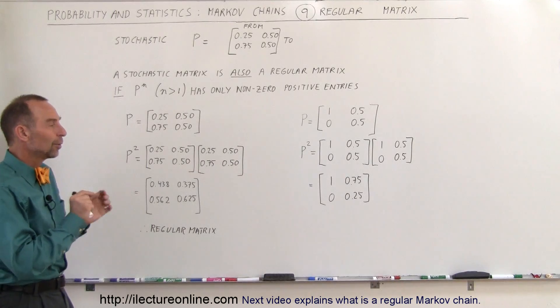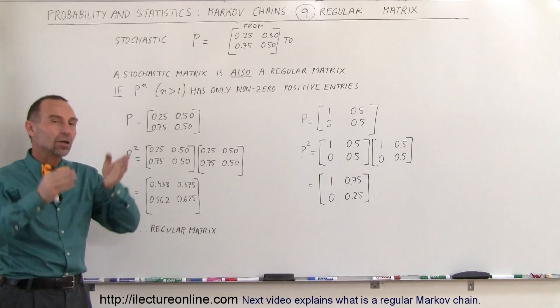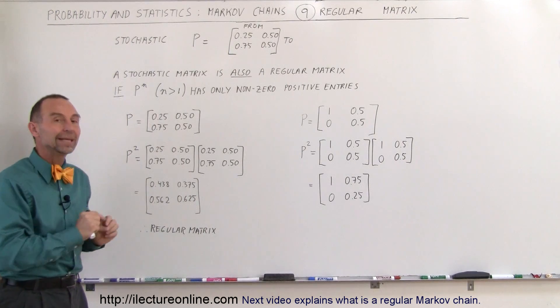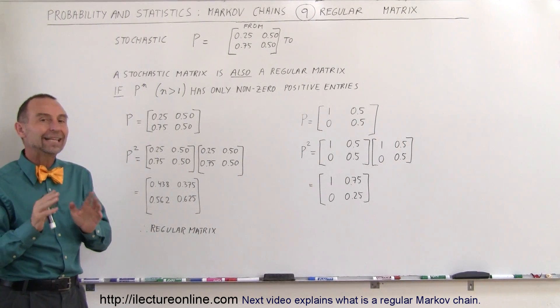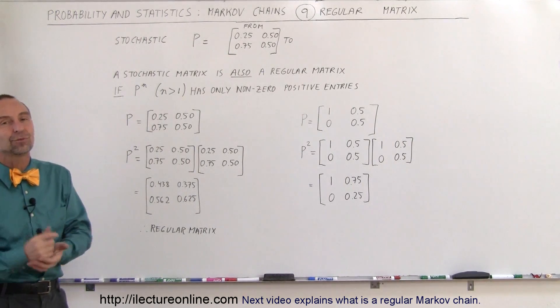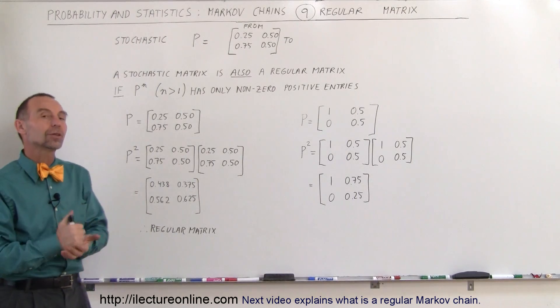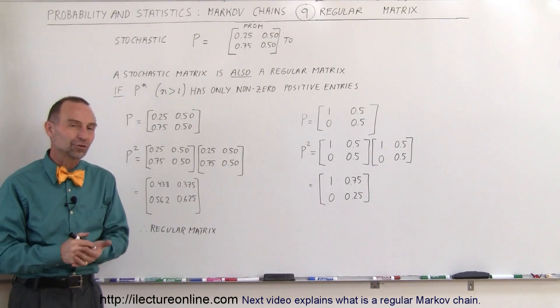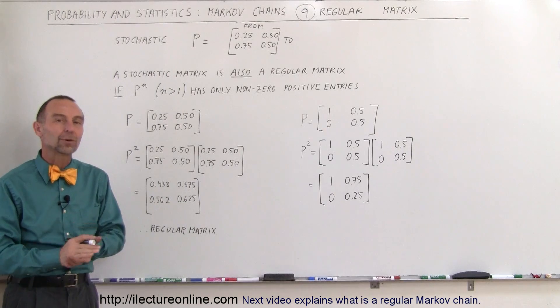So therefore we always want to make sure that it's stochastic, all the columns add up to 1, and that it's regular, meaning that there's not any zero terms or any negative terms in the matrix, and then we can utilize it for the Markov chains. And that's how we work with Markov chains.